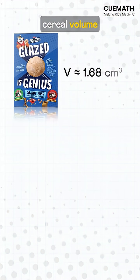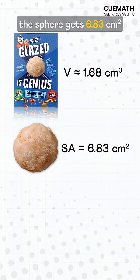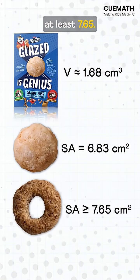For Kellogg's actual cereal volume of 1.68 cubic centimeters, the sphere gets 6.83 square centimeters of glaze. The torus gets at least 7.65.